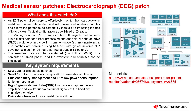The key system requirements for ECG sensor modules are: low cost for disposable patches; small form factor for easy incorporation in wearable applications; efficient battery management and ultra-low power consumption for longer operation; high signal-to-noise ratio, SNR, to accurately capture the low amplitude and low frequency electrical signals of the heart and minimize noise; and quick data transfer to allow real-time monitoring. A common block diagram for an ECG patch is also shown in the slide.